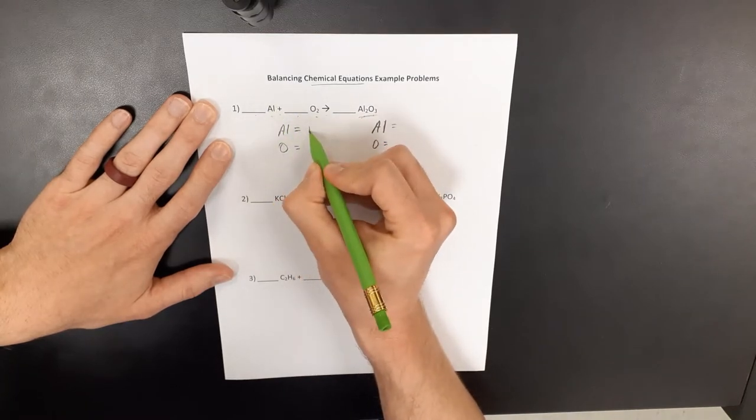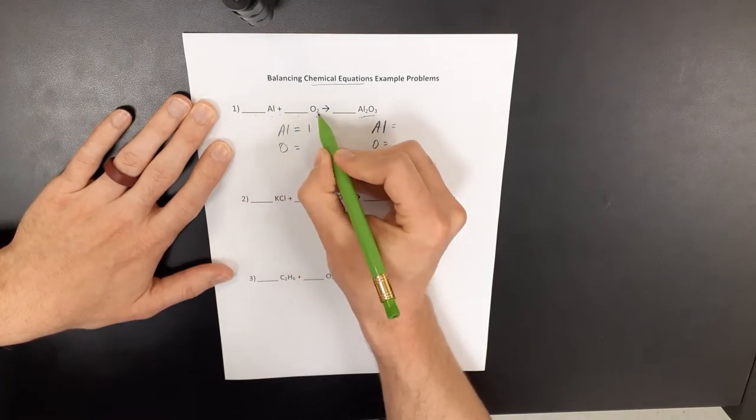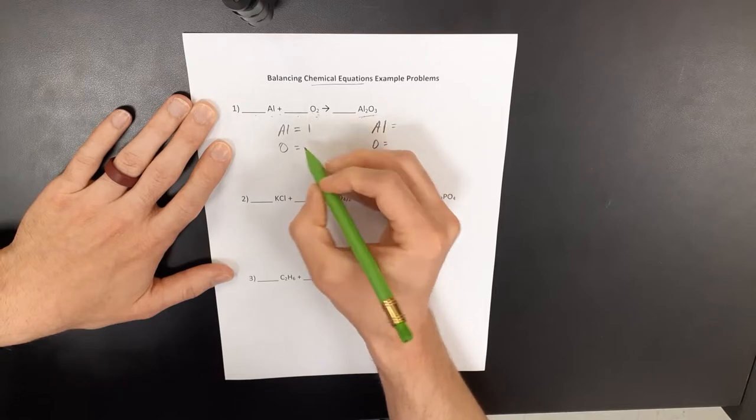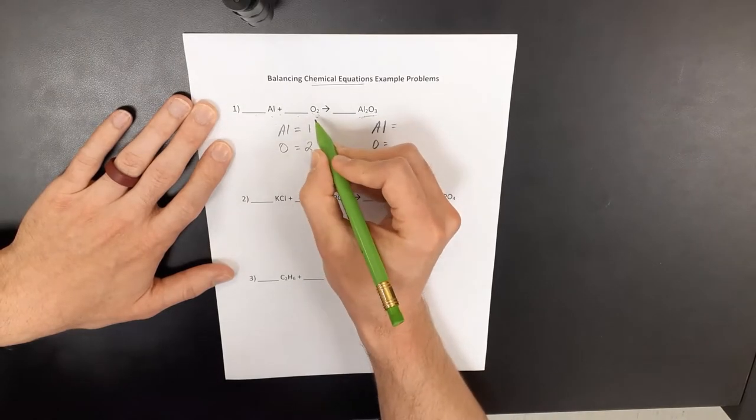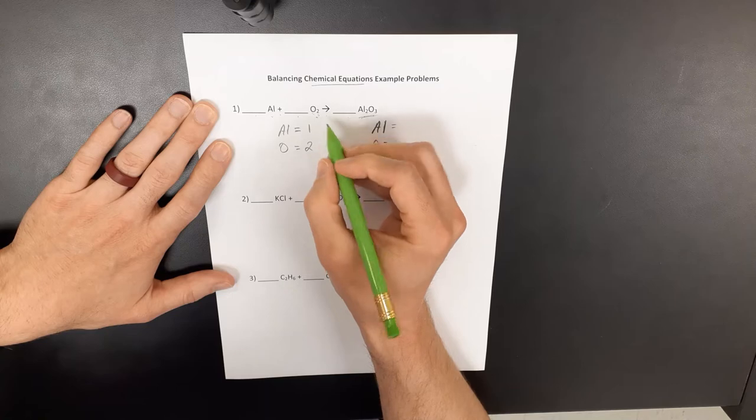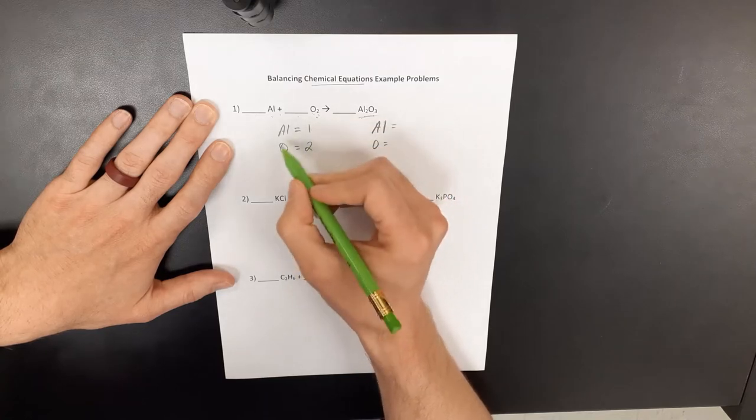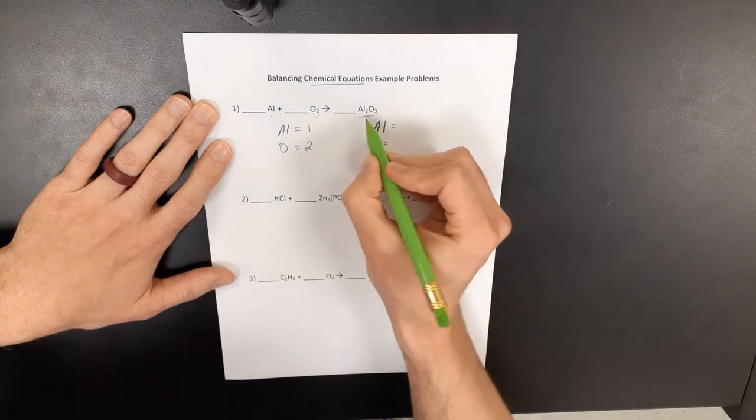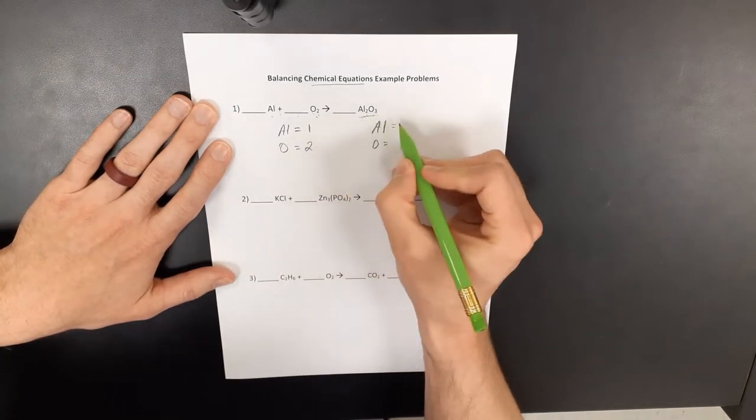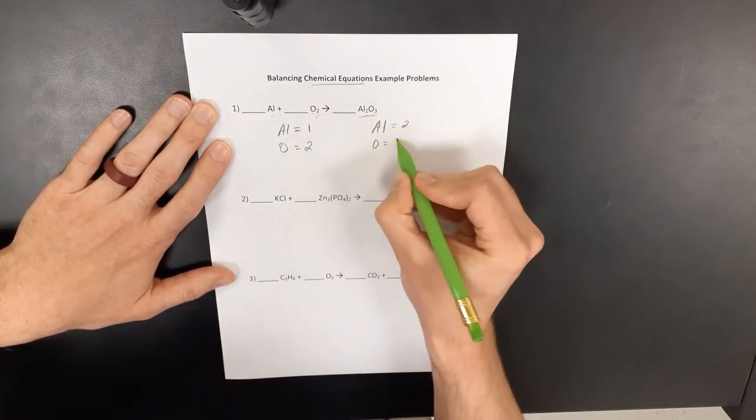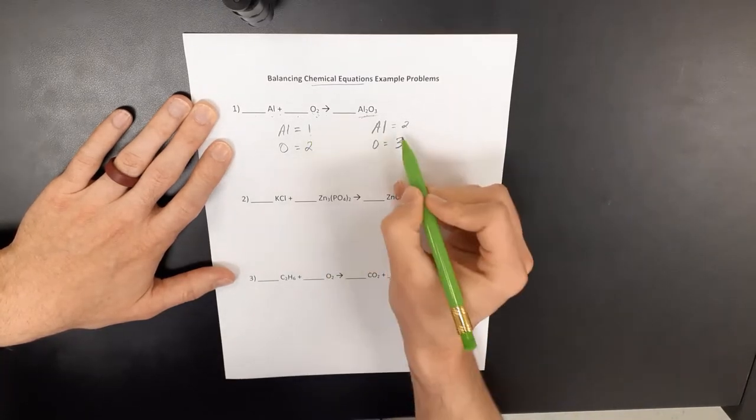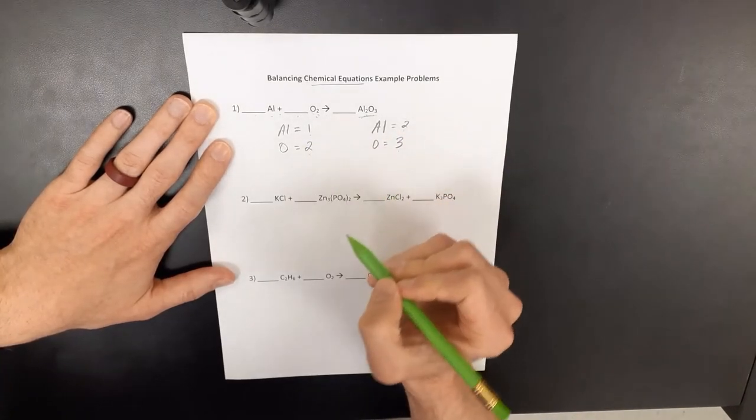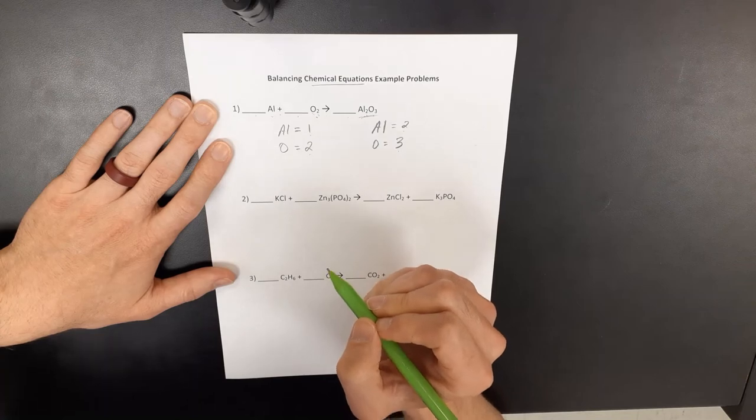The law of conservation of mass is if we start with a certain number of atoms of aluminum, we need to end up with that same number of atoms of aluminum. And so let's count what we have currently. Currently, we have just one aluminum atom.